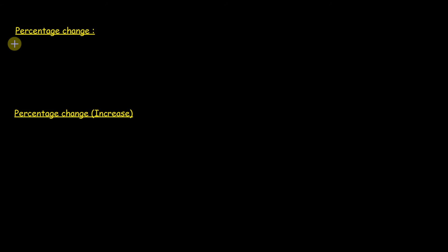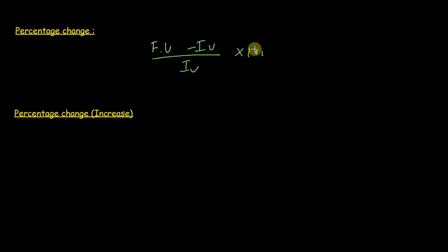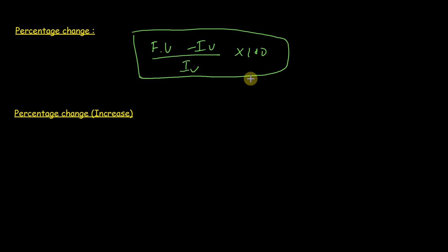In the last lecture I told you about percentage change and I gave you the formula to calculate it — that was: final value minus initial value, divided by initial value, multiplied by 100. Today I am going to explain this concept more. There are two types of percentage change: one is increase percentage change and another is decrease percentage change.